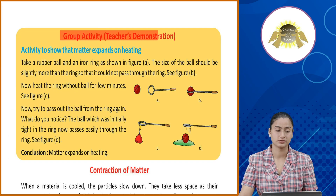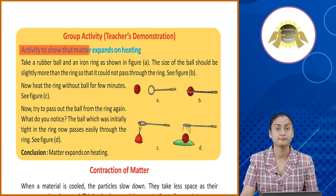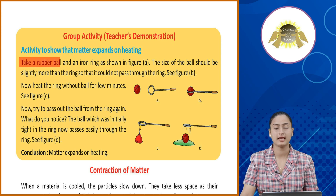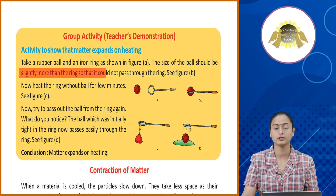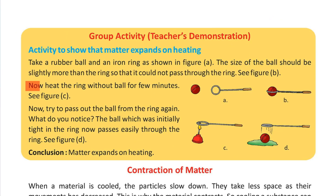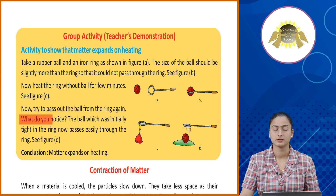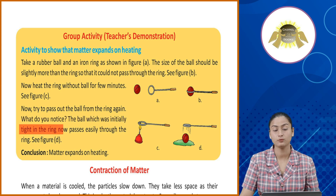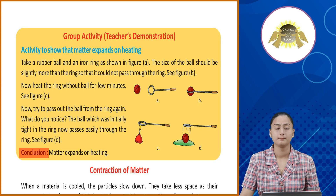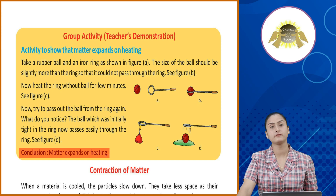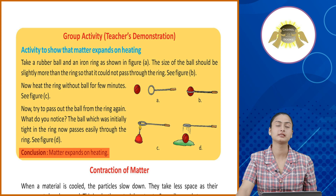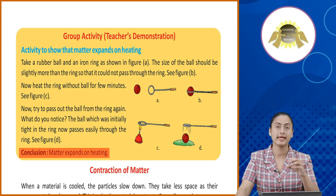Group activity — Teacher's demonstration. Activity to show that matter expands on heating. Take a rubber ball and an iron ring as shown in figure A. The size of the ball should be slightly more than the ring so that it cannot pass through the ring (see figure B). Now heat the ring without the ball for a few minutes (see figure C). Now try to pass the ball through the ring again. What do you notice? The ball which was initially tight in the ring now passes easily through the ring (see figure D). Conclusion: Matter expands on heating. Yeh activity karenge toh pata chalega ki jab heat kara jata hai kisi bhi chiz ko toh uske andar ka jo matter hai wo expand kar jata hai.